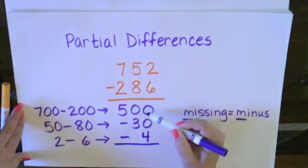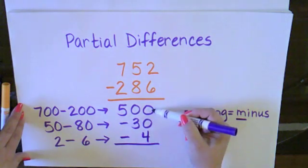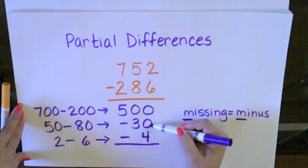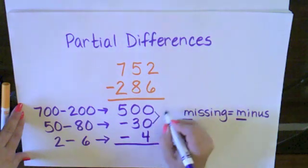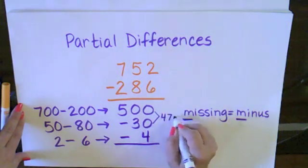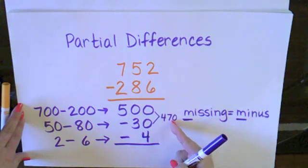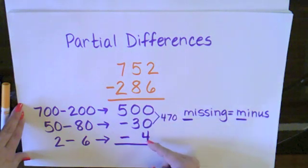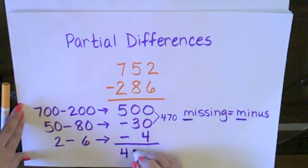Now I can do my subtraction. I have 500 minus 30. And that gives me 470. And then I have 470 minus 4. And that gives me my answer of 466.